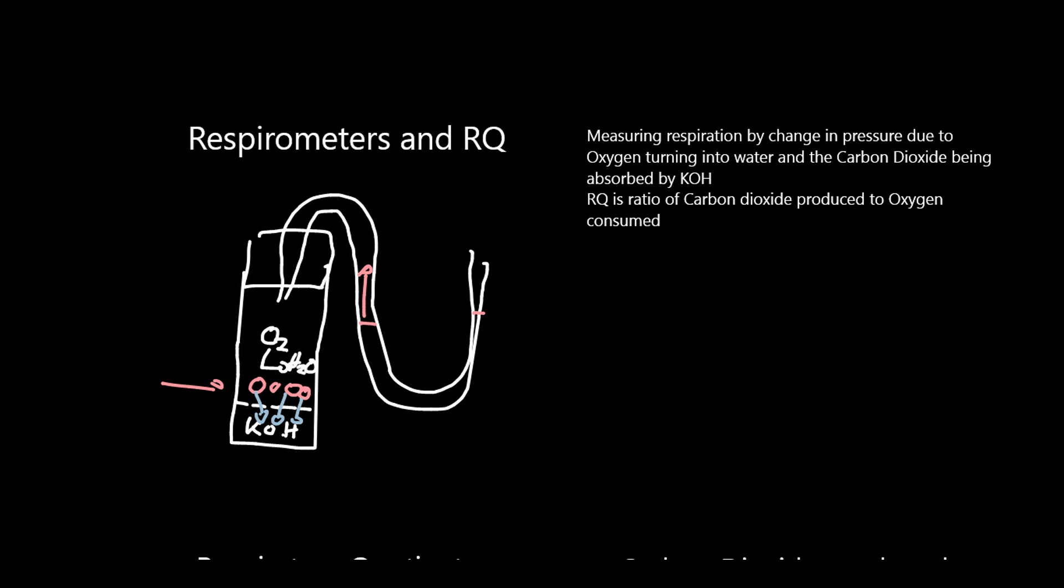If you do that over a set period of time, you can calculate rate, which is consumption of oxygen per unit time, and then if you weigh the mung bean or the maggot, you can measure the rate of respiration per unit mass per unit time.